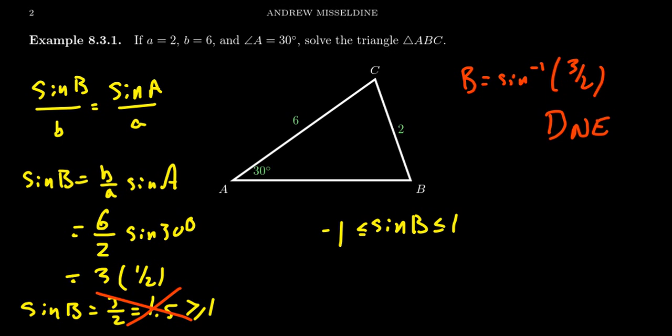that's an indicator that there is, in fact, no solution to solving this triangle. There is no triangle that satisfies the conditions that a is 2, b is 6, and angle A is 30 degrees. So this gives us an example of the ambiguous case that has no solution given side-side angle.